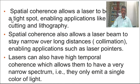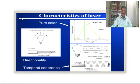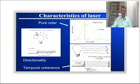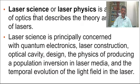Lasers also exhibit spatial coherence, producing a tight spot. They emit only a single color — monochromatic light. An important characteristic is that laser light never deviates; it travels in a particular direction only, unlike an ordinary light source which travels in all directions. This property is called high directionality.